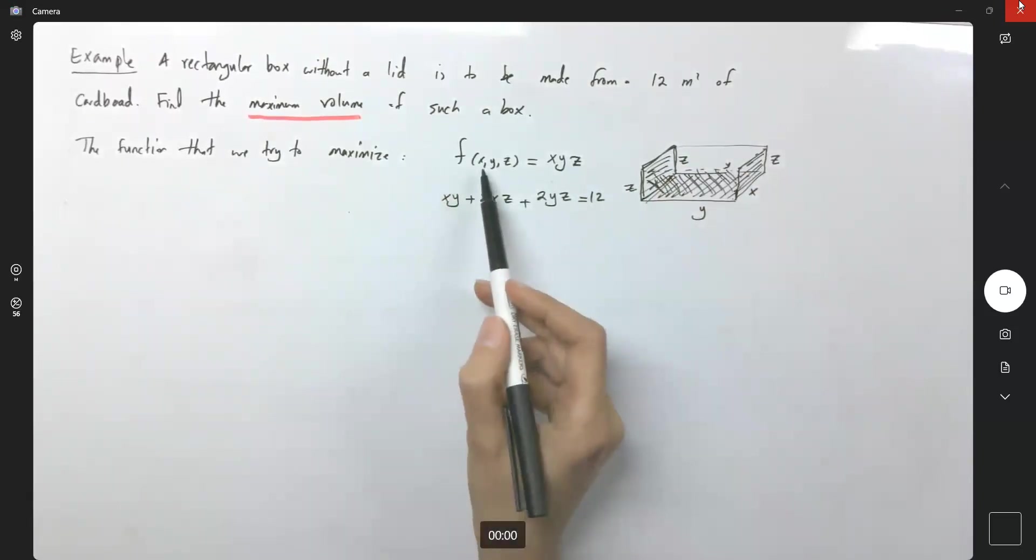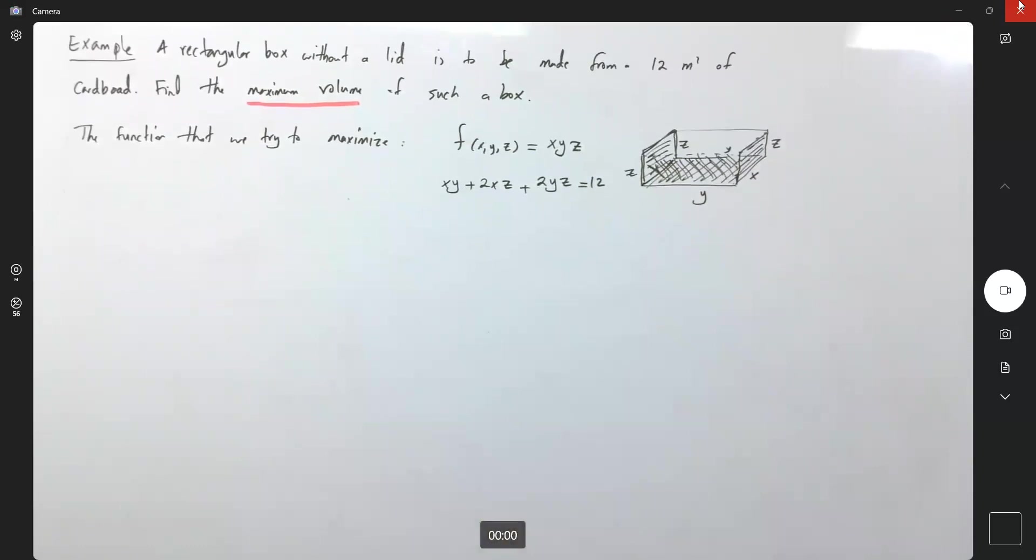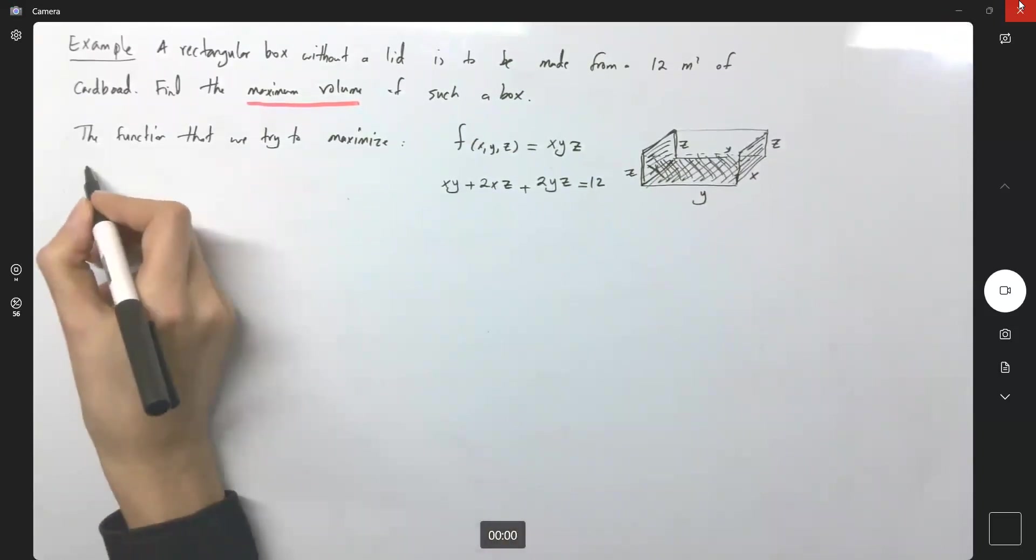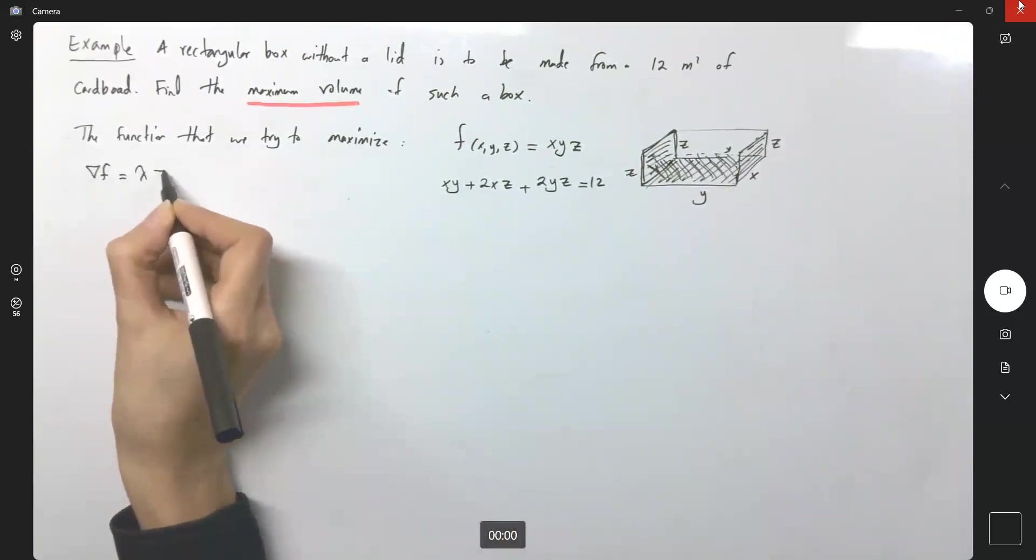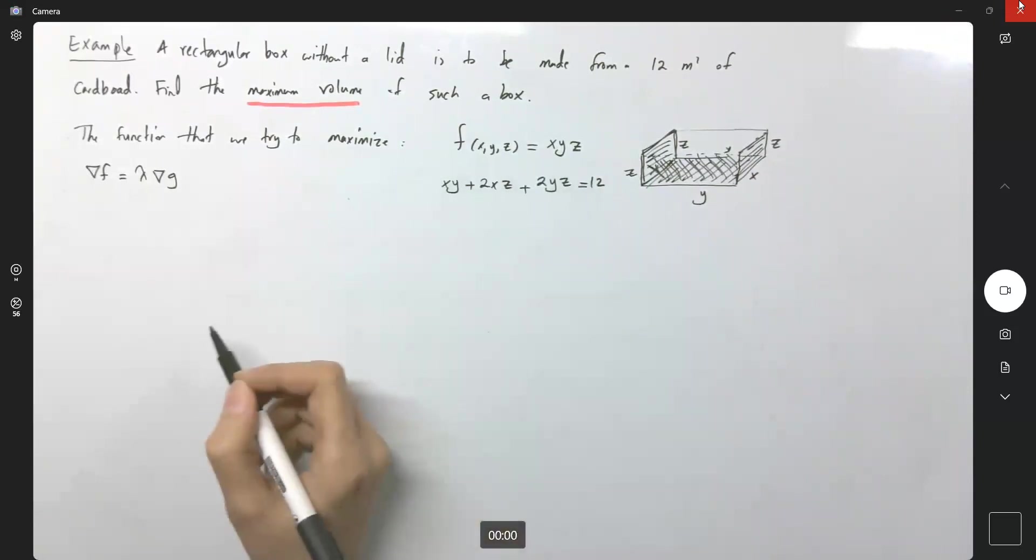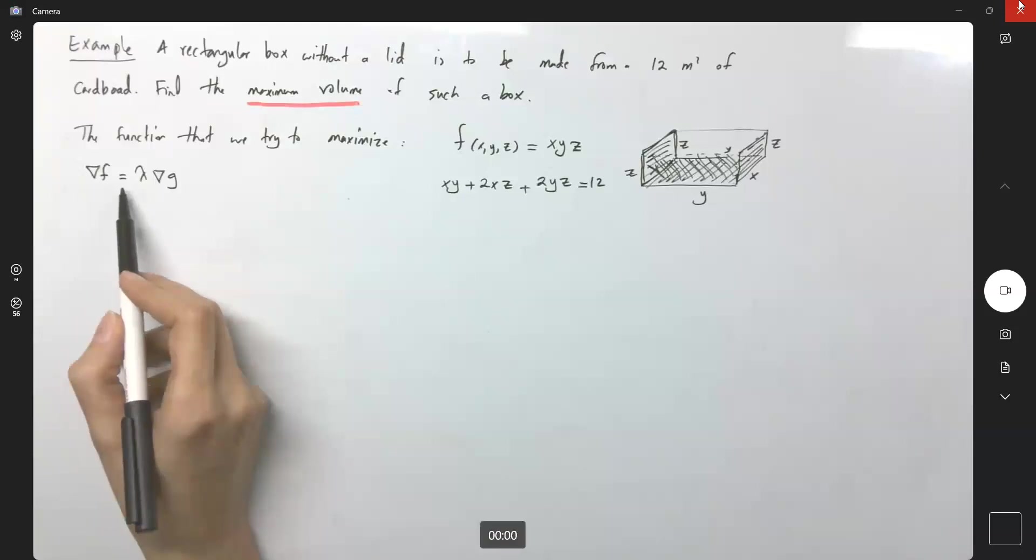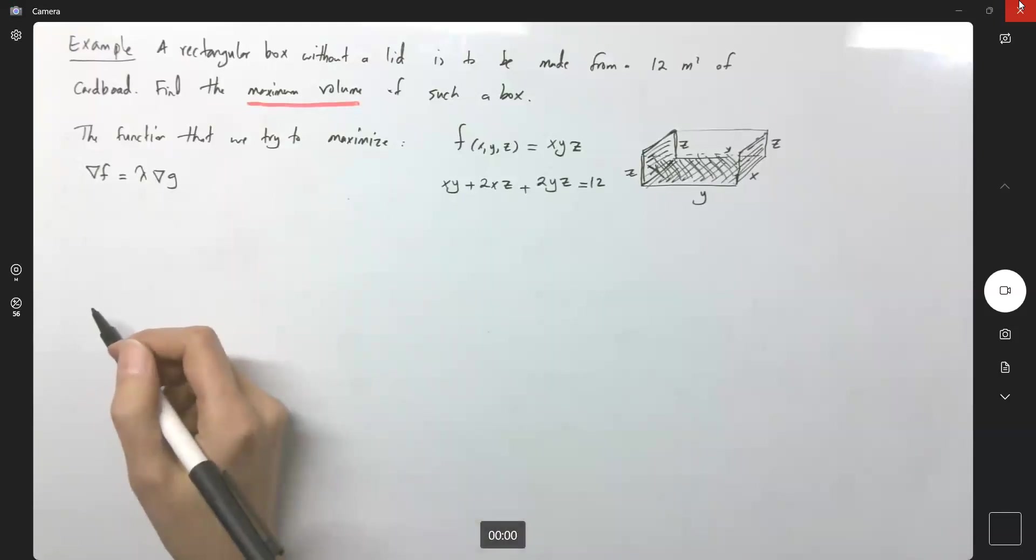So since I have a function with a constraint, I can apply Lagrange multipliers method. So let us begin. The gradient of f is equal to lambda gradient of g, and my g is defined this way. So let us find the gradient of f equals lambda gradient of g and then do the algebra.